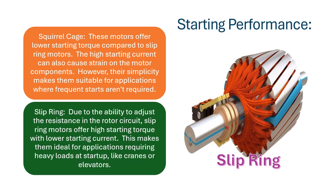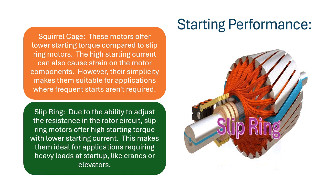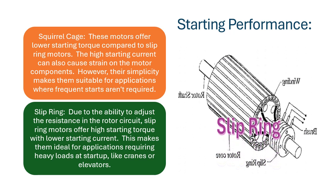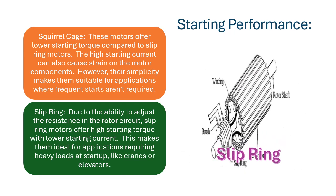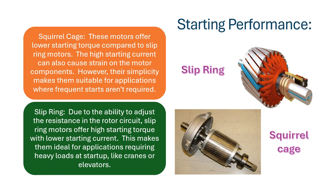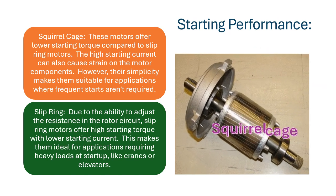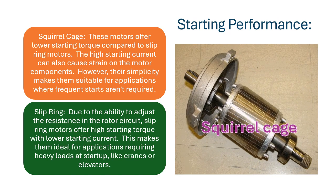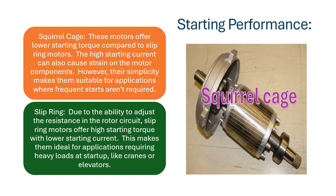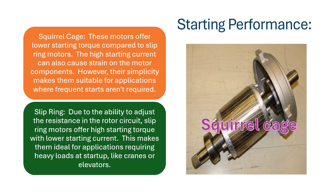Slip Ring: due to the ability to adjust the resistance in the rotor circuit, slip ring motors offer high starting torque with lower starting current. This makes them ideal for applications requiring heavy loads at startup, like cranes or elevators.